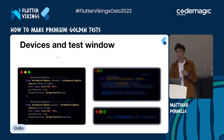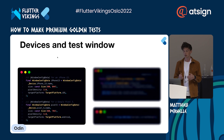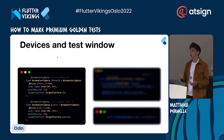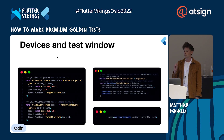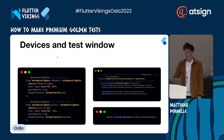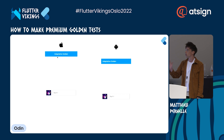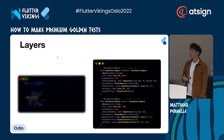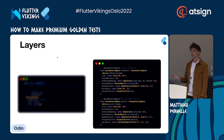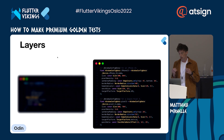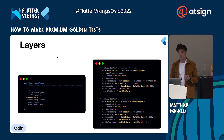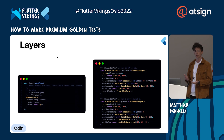Instead of using target platform variants, we can define an object that will represent the physical constraints of a device — for example the screen size and the pixel density. Then we need to configure the test window to which the test is bound. When we run it, we have tests that are starting to look like devices. We can add more device-related data to our object, for example the safe area padding, border radius of the screen, or the notch size. To visualize them in our tests, we can wrap our application into a stack and add on top of it a widget that will paint the physical constraints.